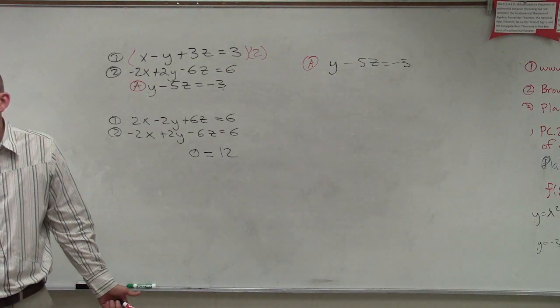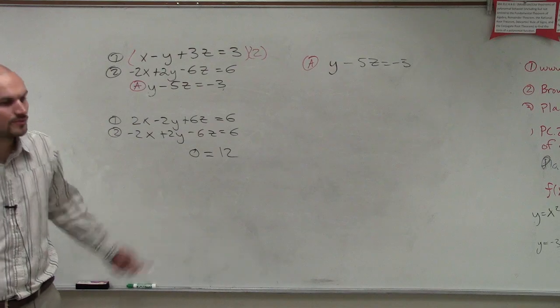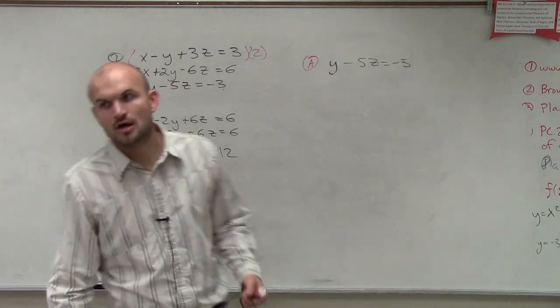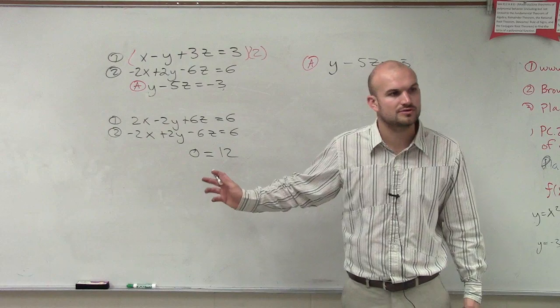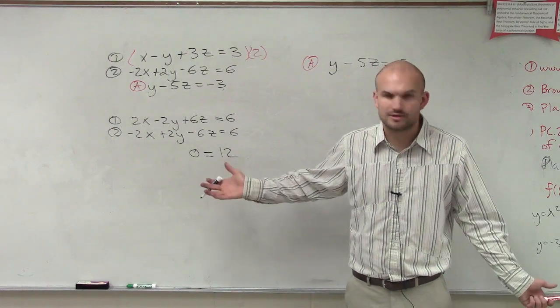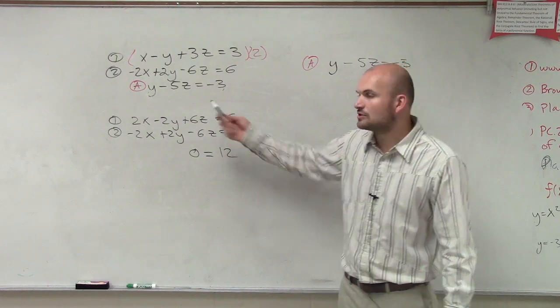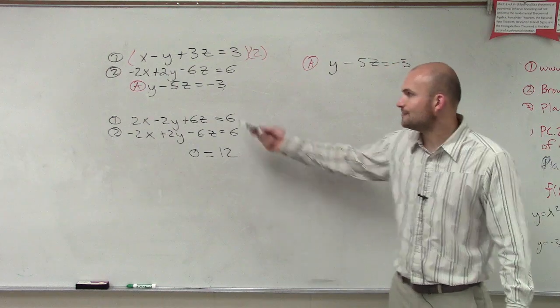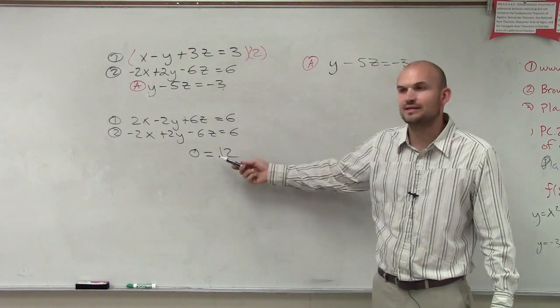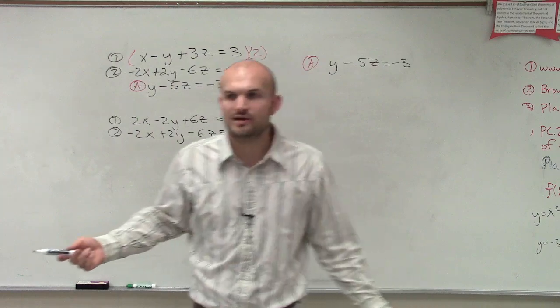And is that possible? No, you can't have that. So when we were talking about when we had two equations, what happens when we got something like this? What do we call our solution? A no solution. We said there's no solution at all. So the same thing is going to happen. If we take our two equations and we end up getting no solution, then we can't have a solution for all equations.